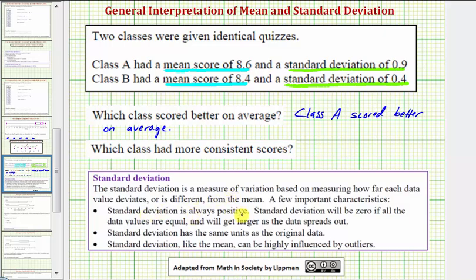Standard deviation is always positive. Standard deviation will be zero if all the data values are equal and will get larger as the data spreads out.